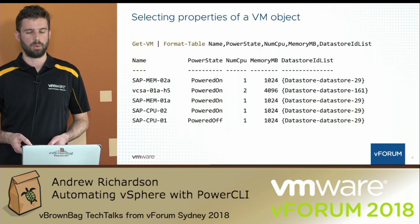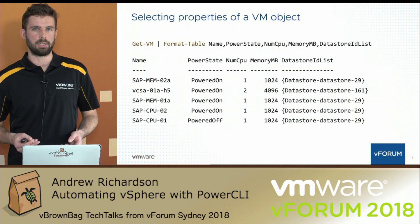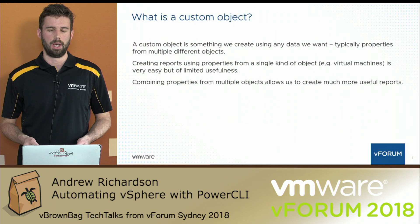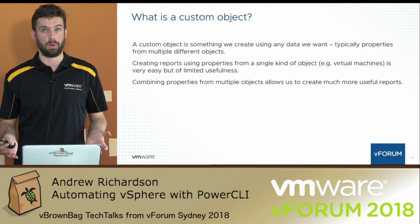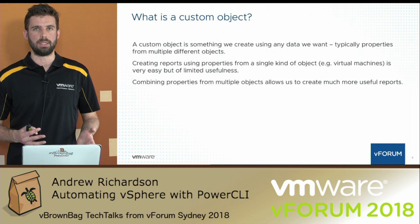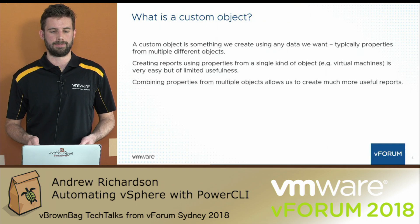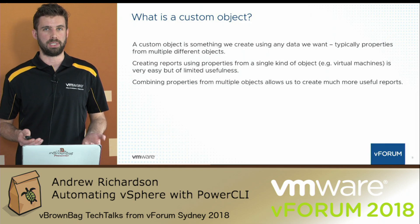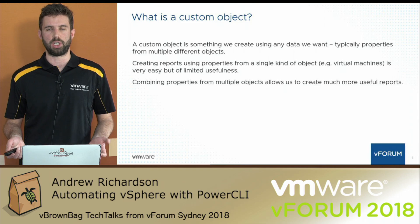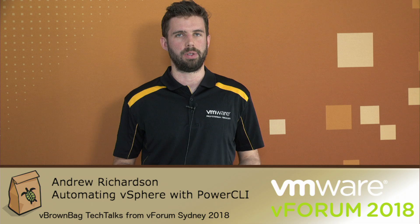Now we understand what an object is in PowerShell — let's talk about what a custom object is. A custom object is something that we create using any data that we want, typically properties from multiple different types of objects. Creating reports from properties from one specific kind of object, like a virtual machine, is very easy but of limited usefulness. However, combining properties from multiple different types of objects allows us to create much more useful reports.